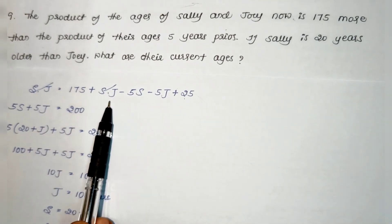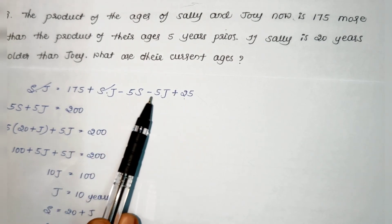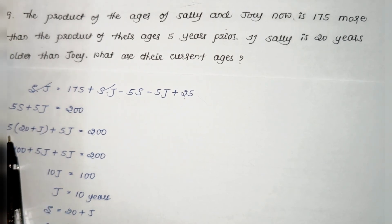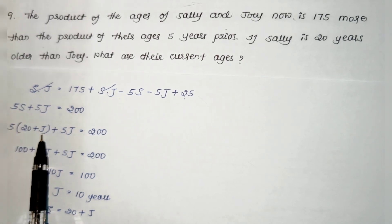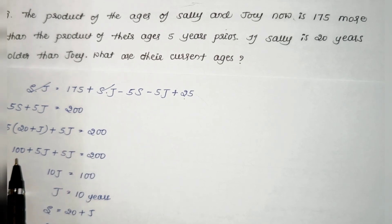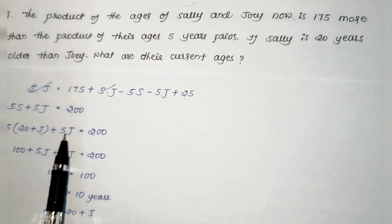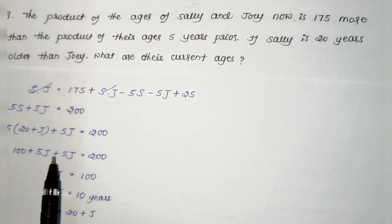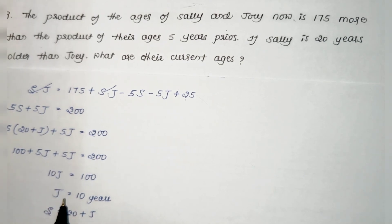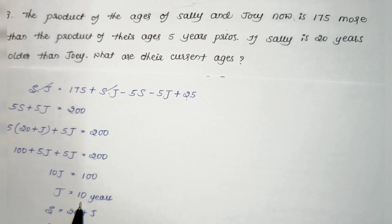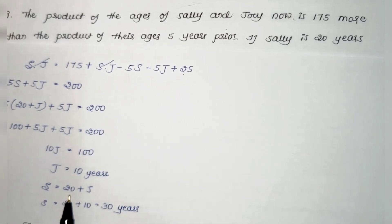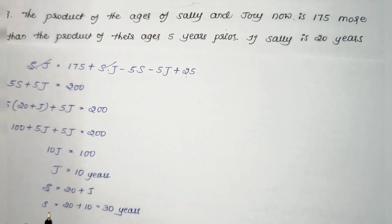The sj terms cancel, leaving 5s + 5j = 200, so 5(s + j) = 200. Since s = j + 20, substituting: 5(20 + j + j) = 200, giving 5(20 + 2j) = 200, so 100 + 10j = 200, therefore 10j = 100 and j = 10 years. Since Sally is 20 years older, s = 20 + 10 = 30 years. Sally is 30 years old and Joy is 10 years old.